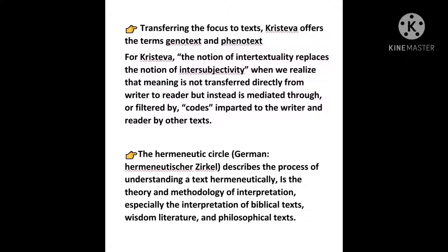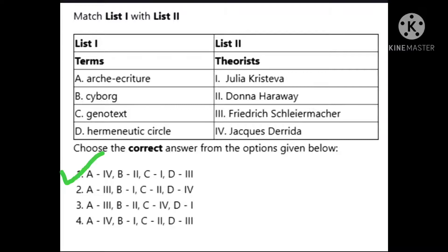The right answer is option A: arche-writing is a term by Jacques Derrida, cyborg manifesto by Donna Haraway, genotext/phenotext by Julia Kristeva, and hermeneutic circle by Friedrich Schleiermacher.